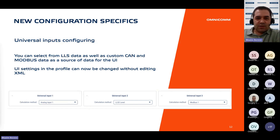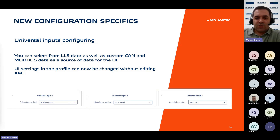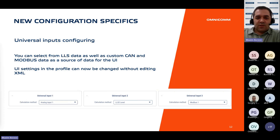Regarding RPM and universal input configuring: previously, universal input configuration was possible via XML files only. However, the update empowers users to configure and modify the required number of universal inputs directly within the profile interface at any time. Users can specify the universal input type — potential, analog, pulse, or frequency — and select data sources for these universal inputs within the parameter settings section.